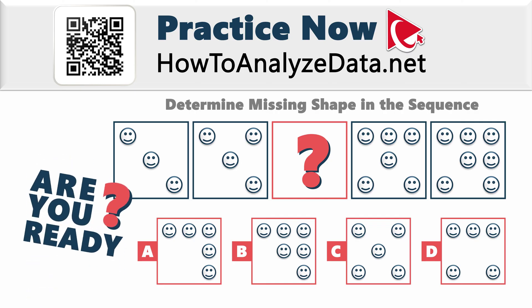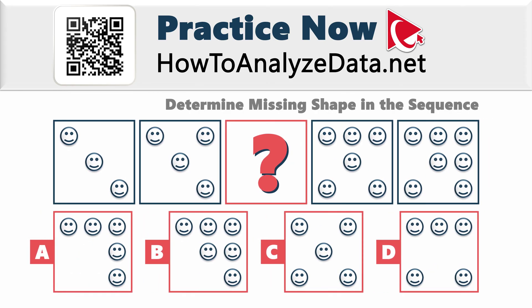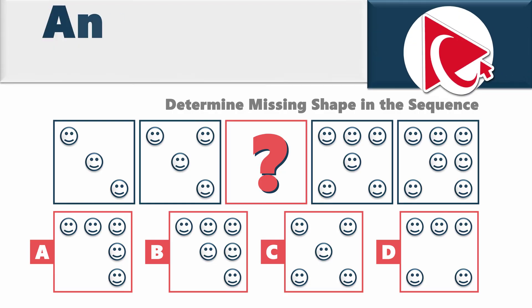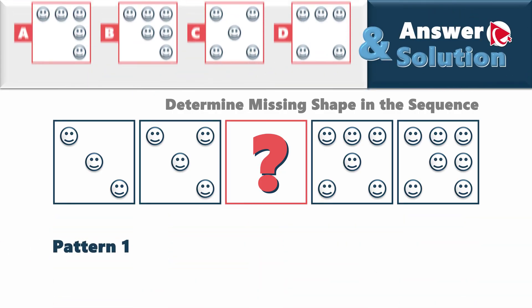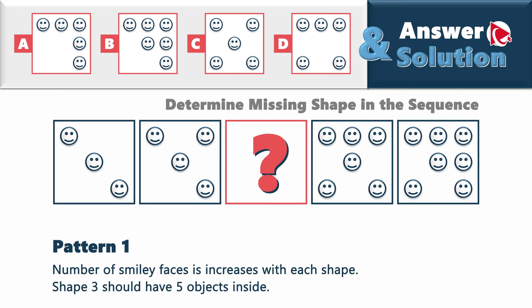Are you ready with your solution? I am eager to see it, so let's proceed and compare the answers. As you might have noticed, there are two patterns here. The first pattern is easiest to detect: the number of smiley faces is increasing with each shape. So shape 3 should have five objects inside.